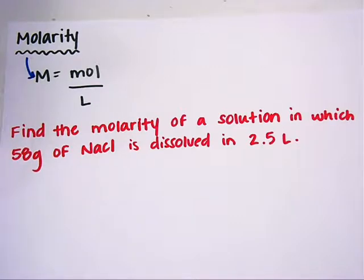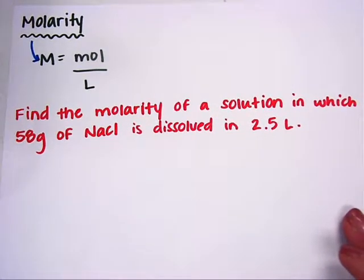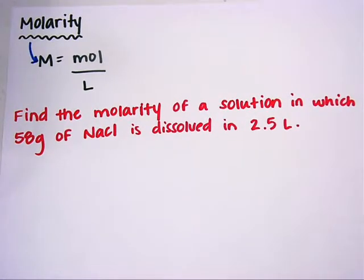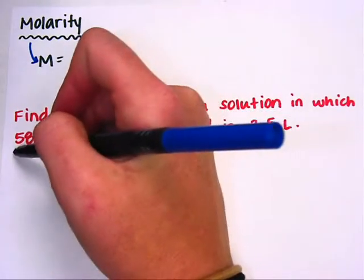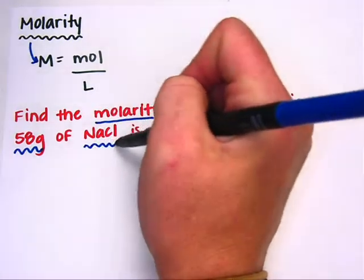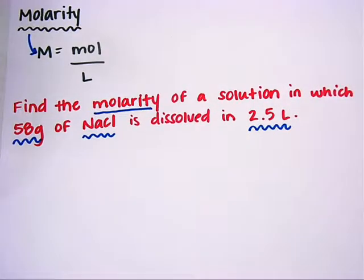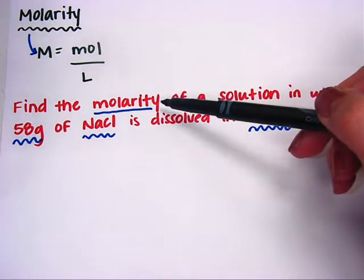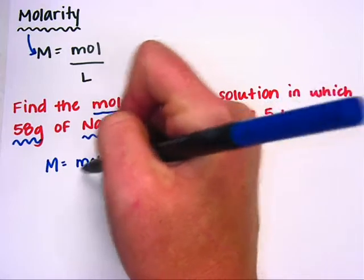In these problems, we're going to be talking about concentrations of solutions. The first problem is to find the molarity of a solution in which 58 grams of NaCl is dissolved in 2.5 liters. I'll underline my unknown, which is the molarity, and I'll also underline my given information. Whenever you see molarity in a problem, the first thing I want you to do is write: molarity equals moles divided by liters.